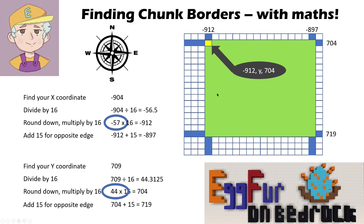It's worth pointing out why this works: zero, zero coordinates — x zero, z zero — that's the corner of the first chunk in the world. At the zero zero point that is actually a chunk corner. So what this calculation is doing is working out how many jumps of 16 there are from that zero zero point, and that will always land on a new chunk corner.